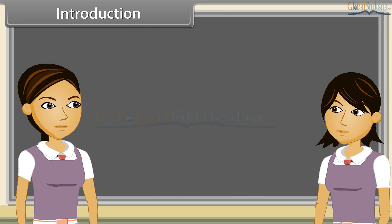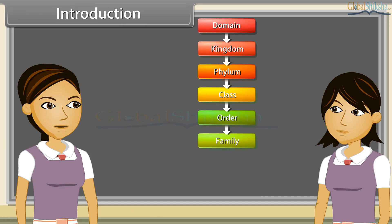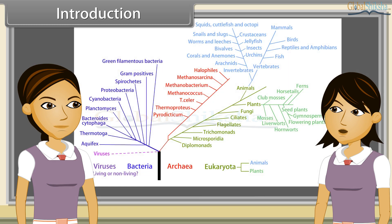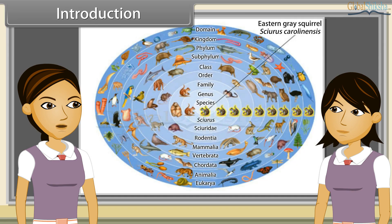Biological classification, or scientific classification in biology, is a method by which biologists group and categorize organisms by biological type, such as genus or species. Modern biological classification has its root in the work of Carolus Linnaeus, who grouped species according to shared physical characteristics. These groupings have since been revised to improve consistency with the Darwinian principle of common descent.